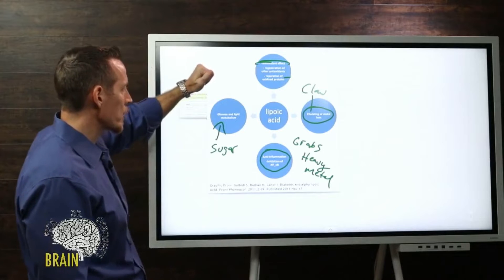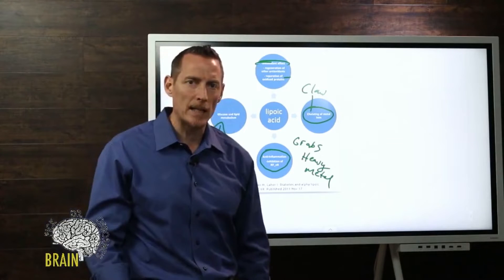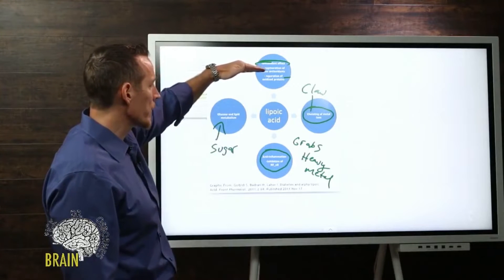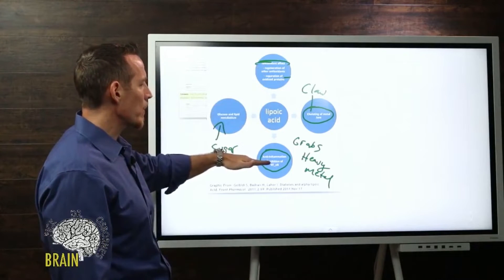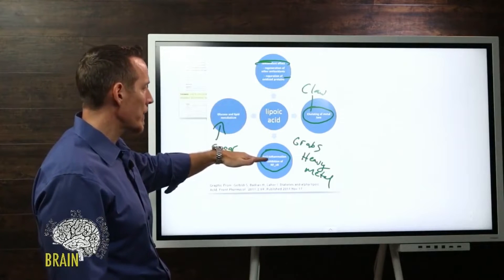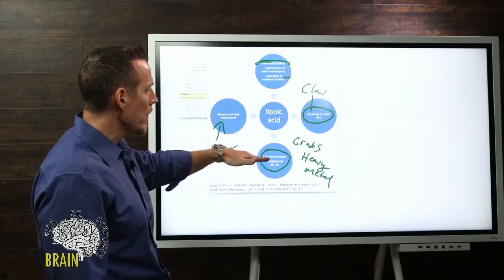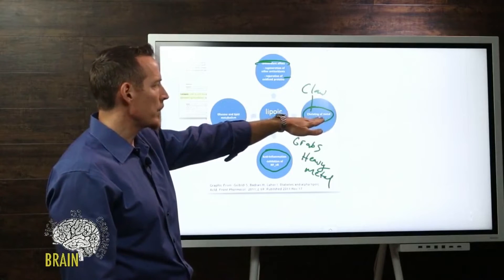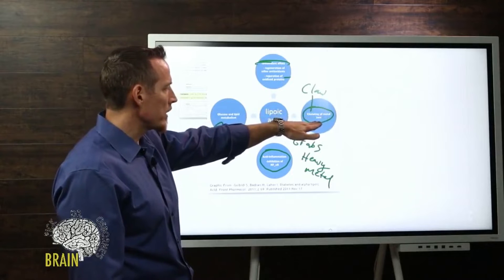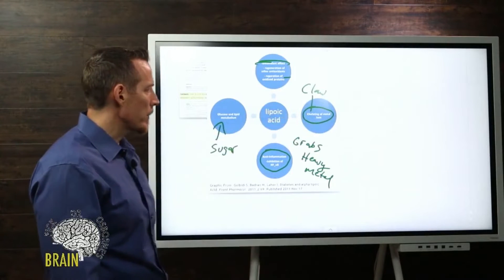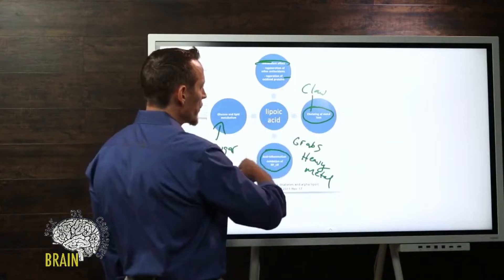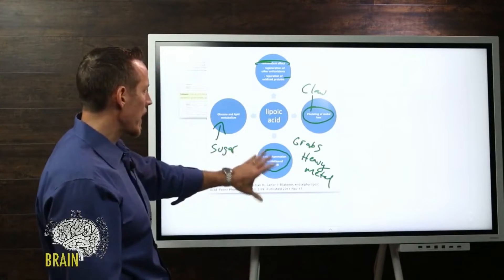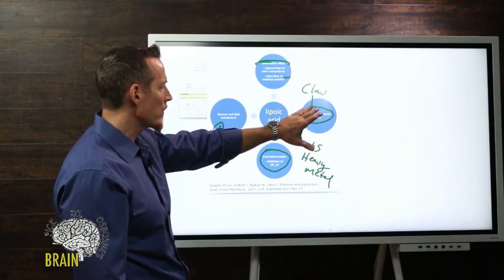We know that alpha lipoic acid from a dementia perspective can help with blood sugar management, help as an antioxidant and to regenerate damaged oxidized proteins. What do we find in Alzheimer's patients? Beta amyloid plaquing, which is an oxidized protein substrate. We know it has anti-inflammatory properties - dementia and Alzheimer's is an inflammatory disease. We know brain damage can also be caused by heavy metals like mercury, cadmium, and lead. That doesn't mean lipoic acid pulls those metals into your brain.